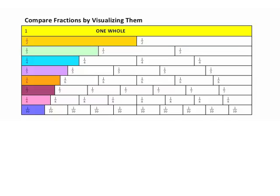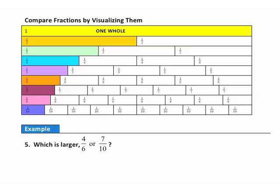Compare fractions by visualizing them. There's a chart that starts at the top with one whole object and, as you work down, gets divided into smaller and smaller pieces. Dividing into two pieces gives one-half; dividing into three gives one-third. The pattern is that as we divide into more and more pieces, the pieces get smaller — so one-tenth represents a very small amount because the whole object is divided into ten equal pieces.